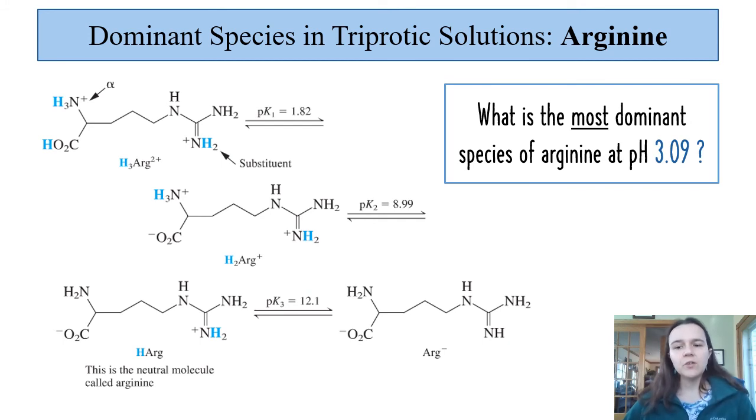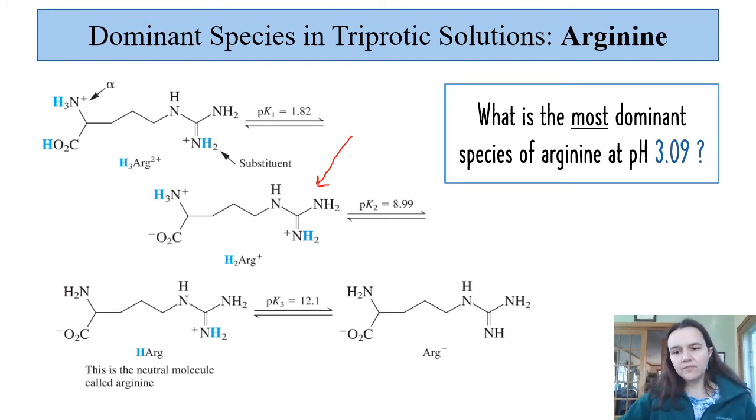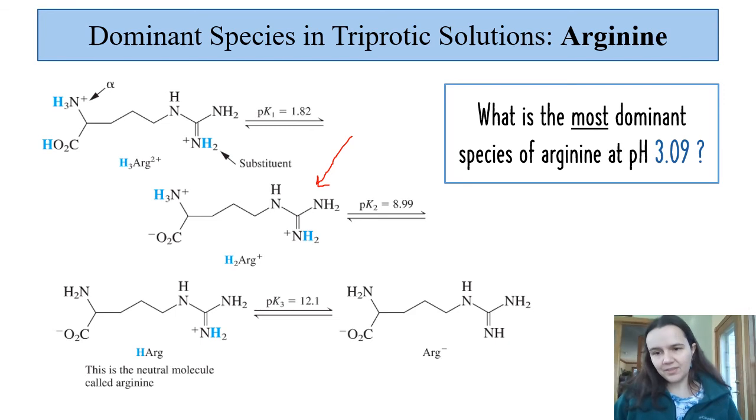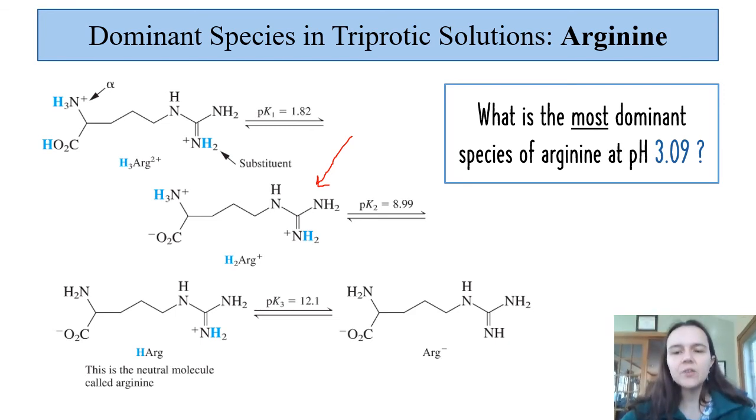Now changing the question a little bit, what is the most dominant species of arginine at pH 3.09? We're going to come over and we're going to be like well pKa here is 1.82, so it's right in between pKa of 1.82 and 8.99. If you are not familiar enough with this type of drawing, then you can also make a full out ladder diagram.